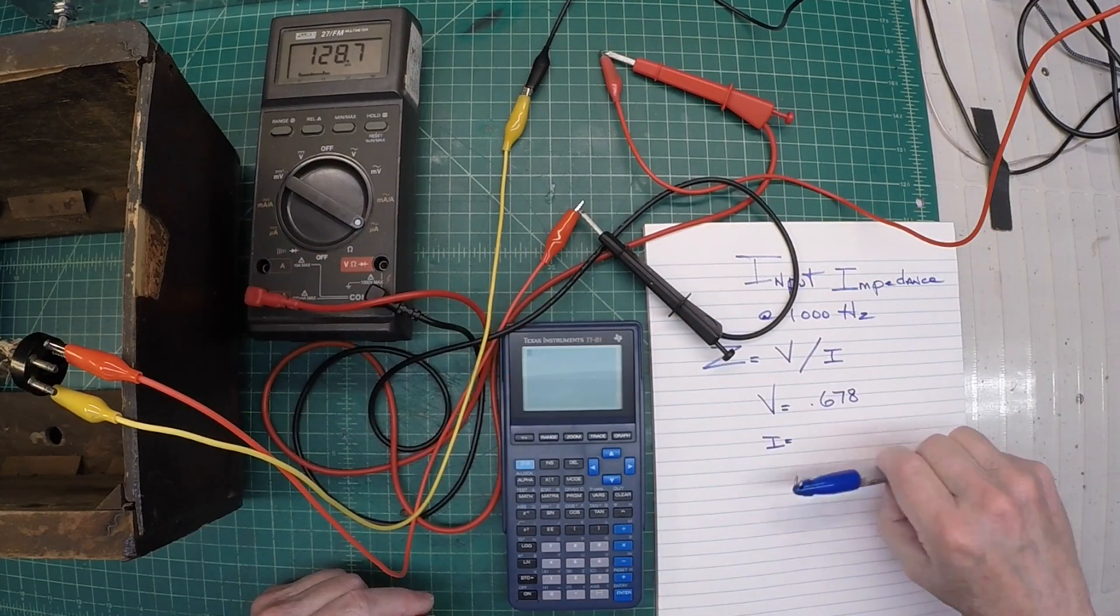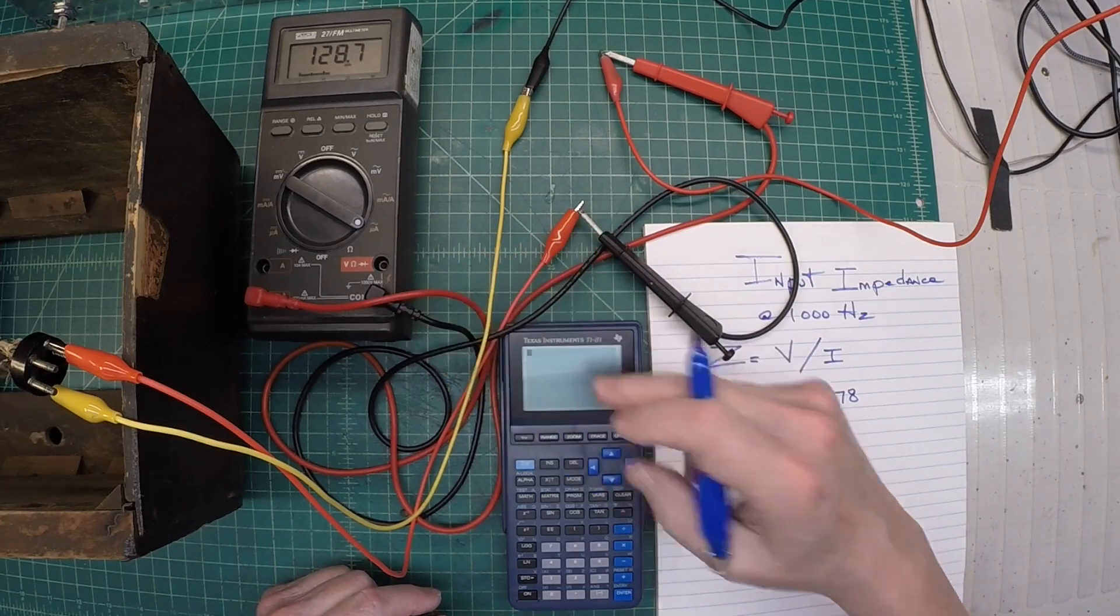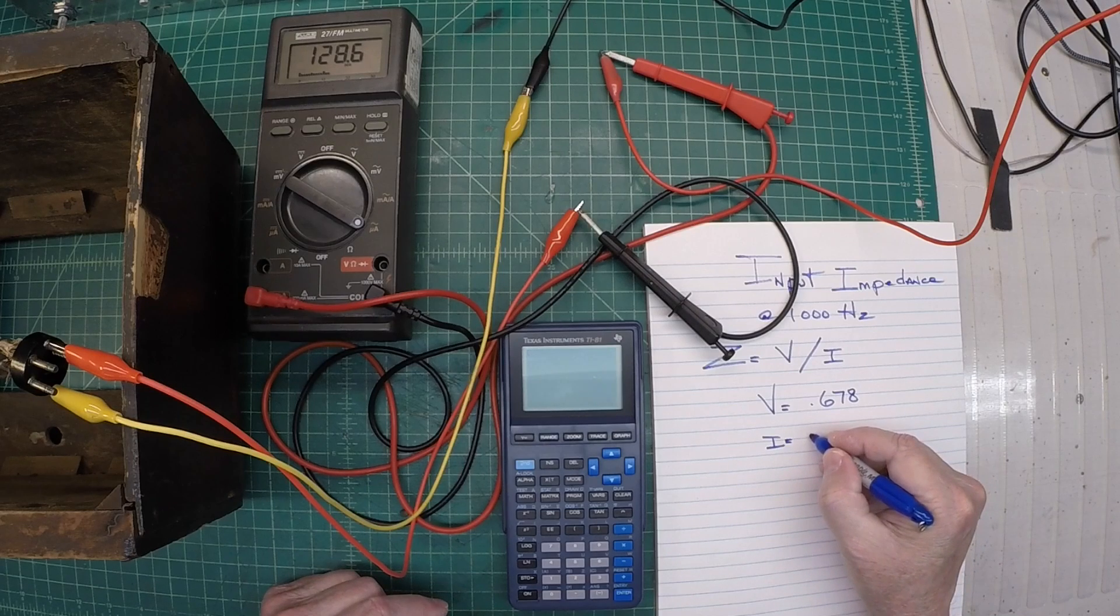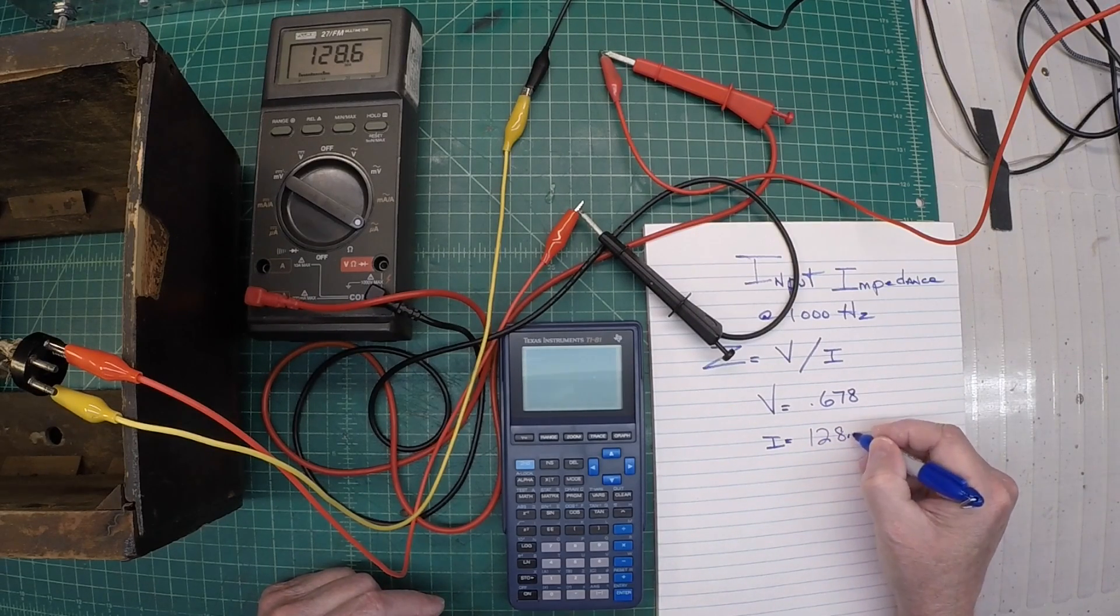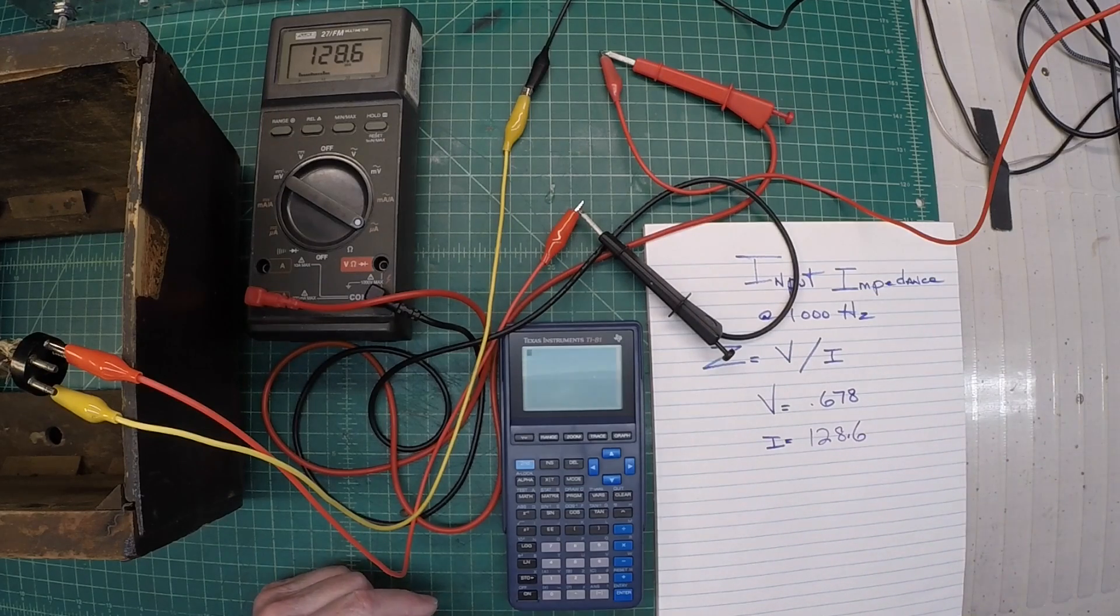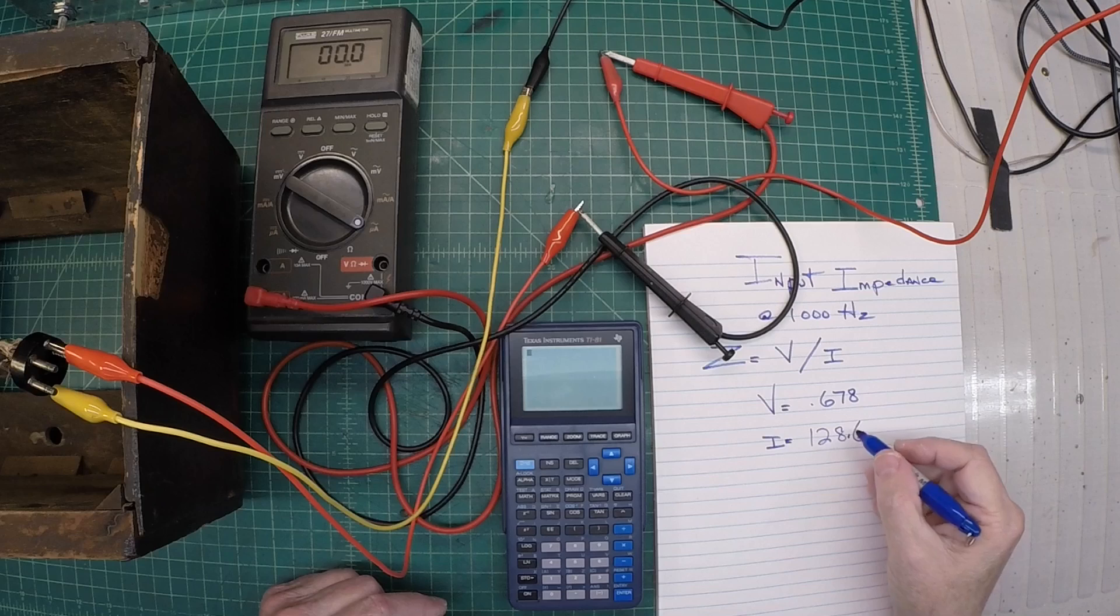Okay, I'm getting the meter hooked back up here. And you can see I'm going to look at microamps. And we'll go ahead and make note of that reading here at 128.6. And let me just shut everything off here so we don't have that nasty noise here in the background.